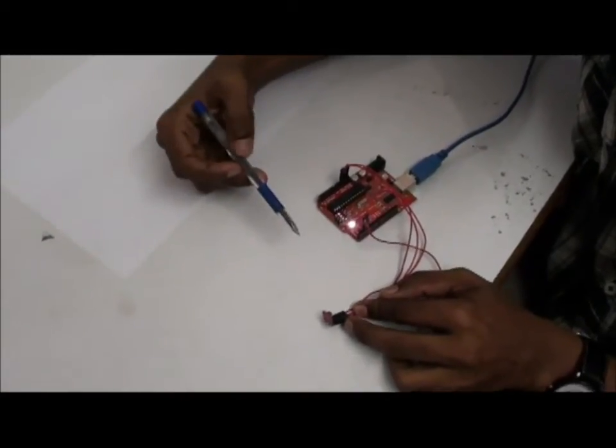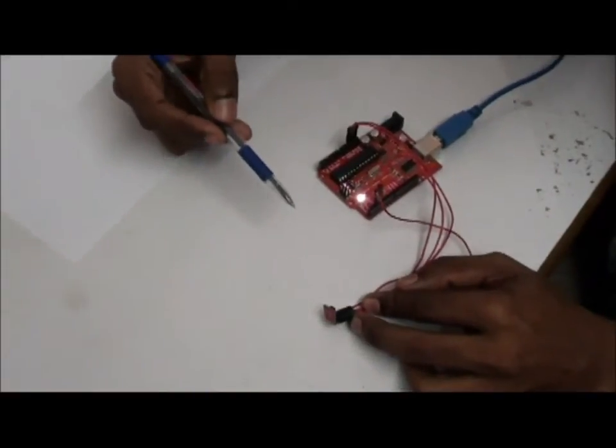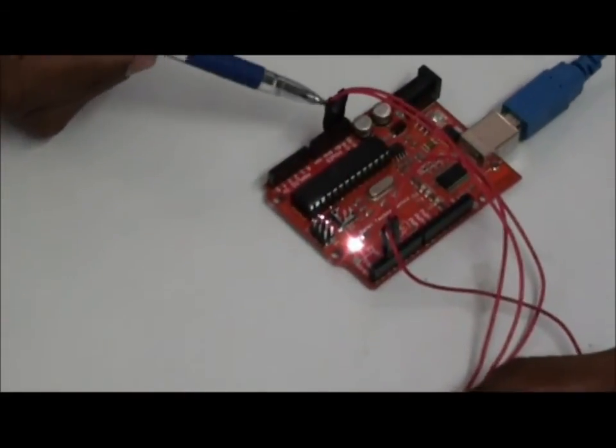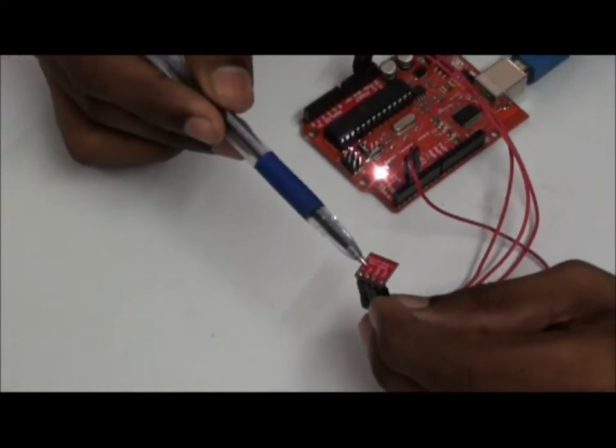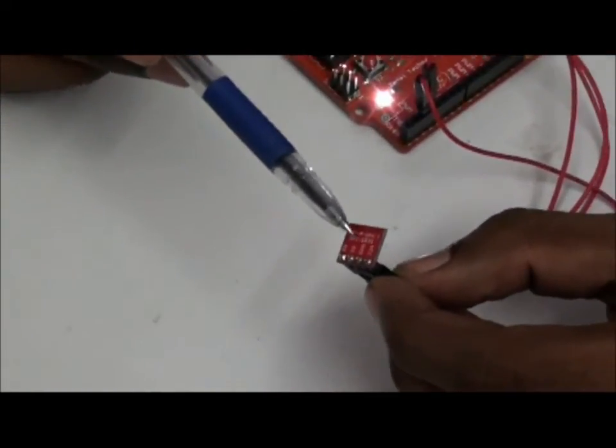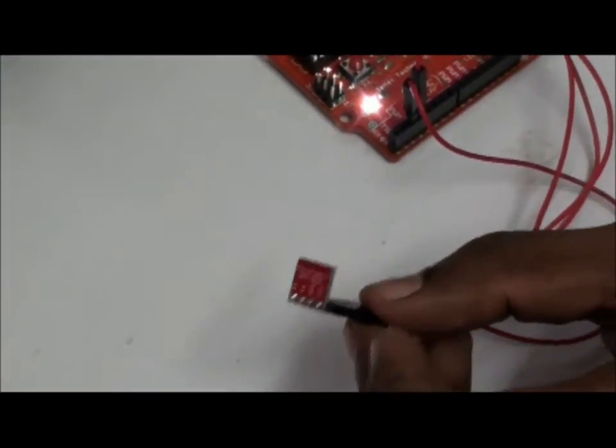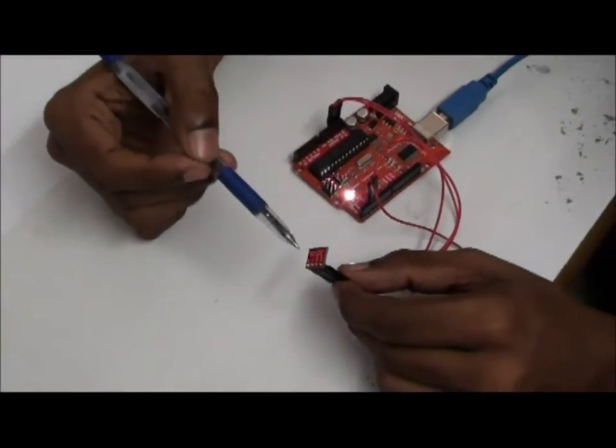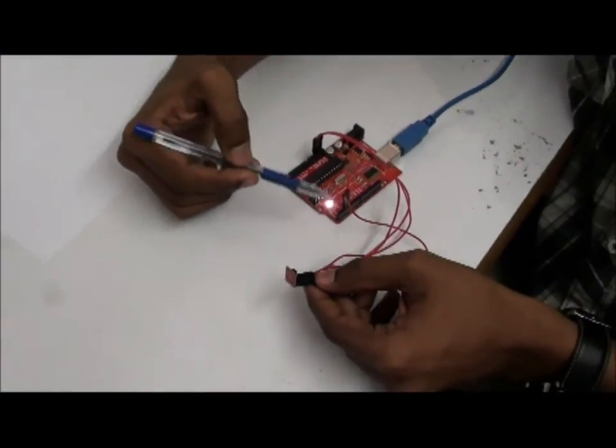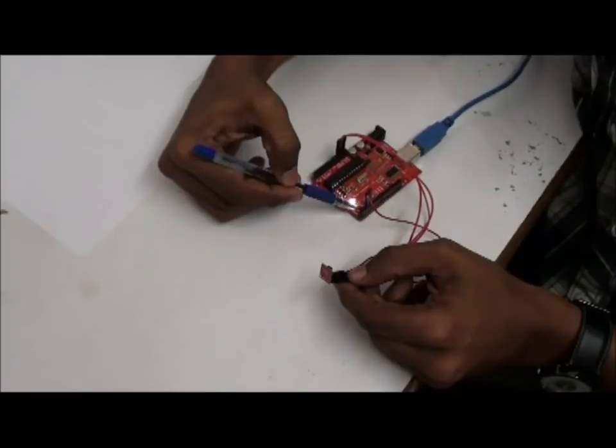The operating voltage of this tilt sensor ranges from 3.3 volts to 5 volts. I have connected the supply to 3.3 volts and ground. Here we have two points, S1 and S2. These two are the phototransistor outputs. I have connected the outputs to Arduino pins 2 and 3.